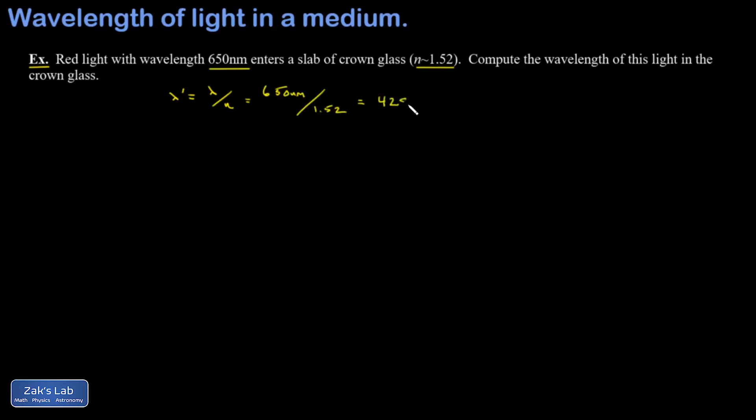To three sig figs, I get 428 nanometers for the wavelength of this light within the glass. And we're done with the example.